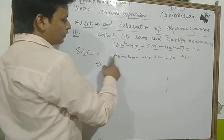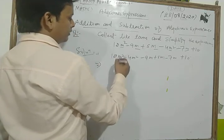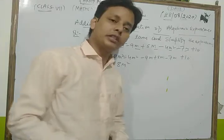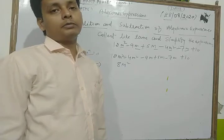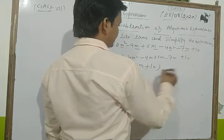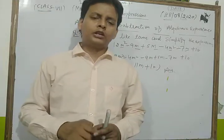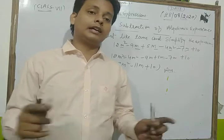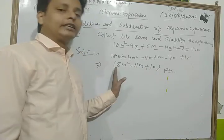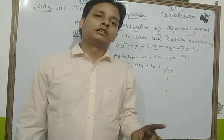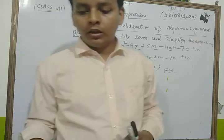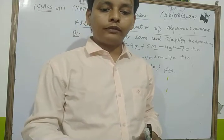Now we simplify: 12m² minus 4m² gives 8m². Then minus 9m plus 5m is minus 4m, and minus 4m minus 7m is minus 11m. The constant term 10 is written as it is. So the answer is 8m² minus 11m plus 10. One important thing — never add unlike terms. Always only like terms are added or subtracted.